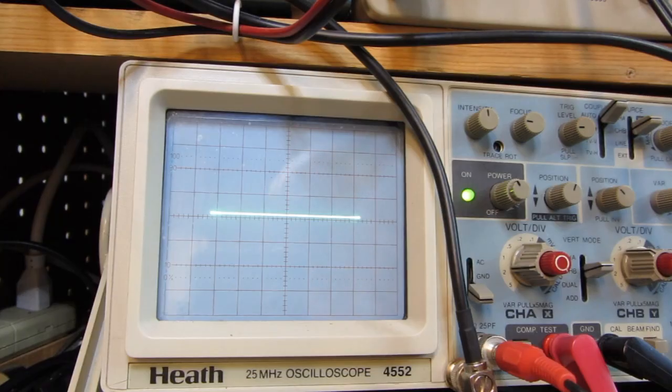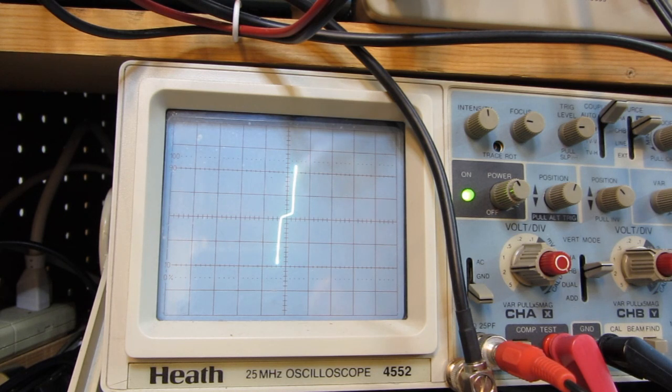I'm going to work backwards from pin 16 down to pin 9. I will start out with the good channel. Pin 16, good channel. Pin 16, defective channel. Looks about the same. 15, good channel. 15, defective channel. 14, good channel. 14, defective channel. 13, good channel. 13, defective channel. So far, everything's looking about the same.